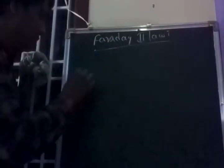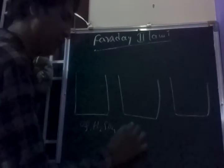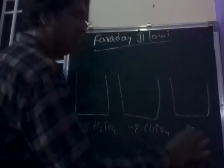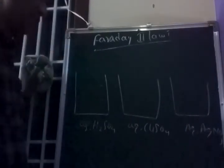Faraday's Second Law: Different electrolytic cells are connected in series. For example, aqueous H₂SO₄, aqueous CuSO₄, and aqueous AgNO₃ are taken as three different electrolytes connected in series. One cathode is connected to the next anode in a series arrangement. Suppose Q amount of current is passed through the electrolytes connected in series.